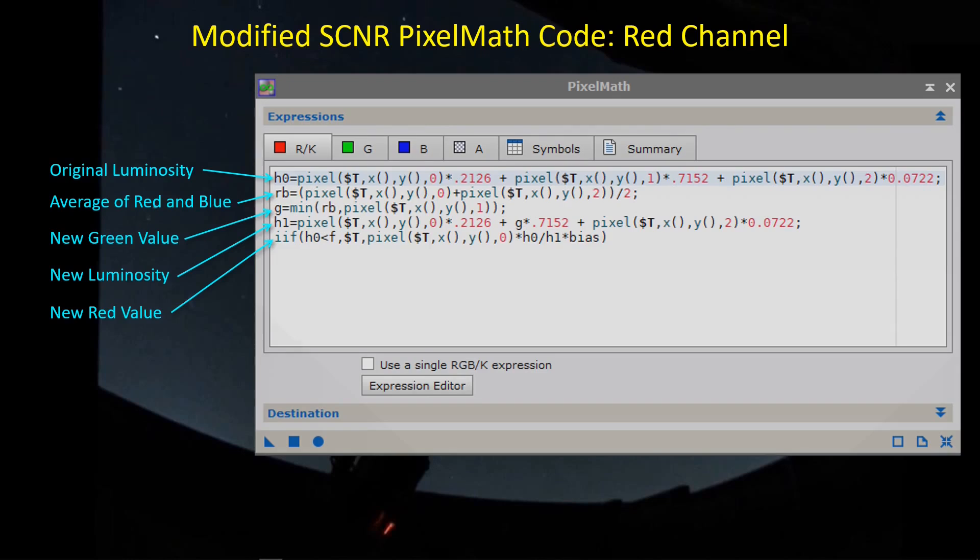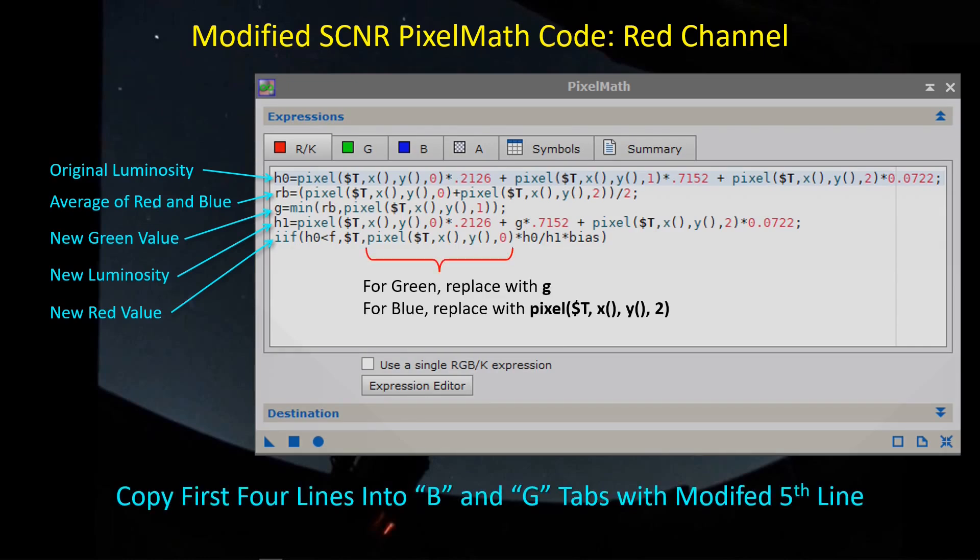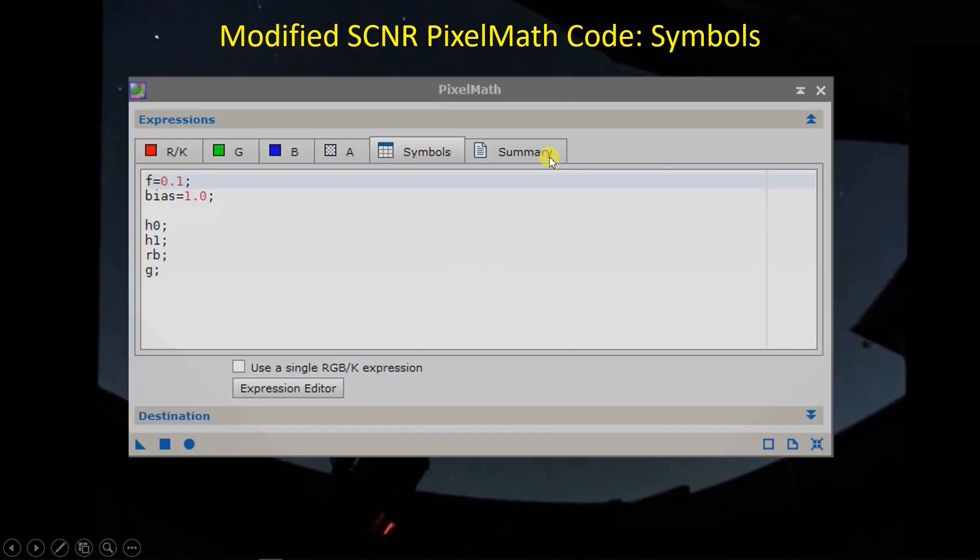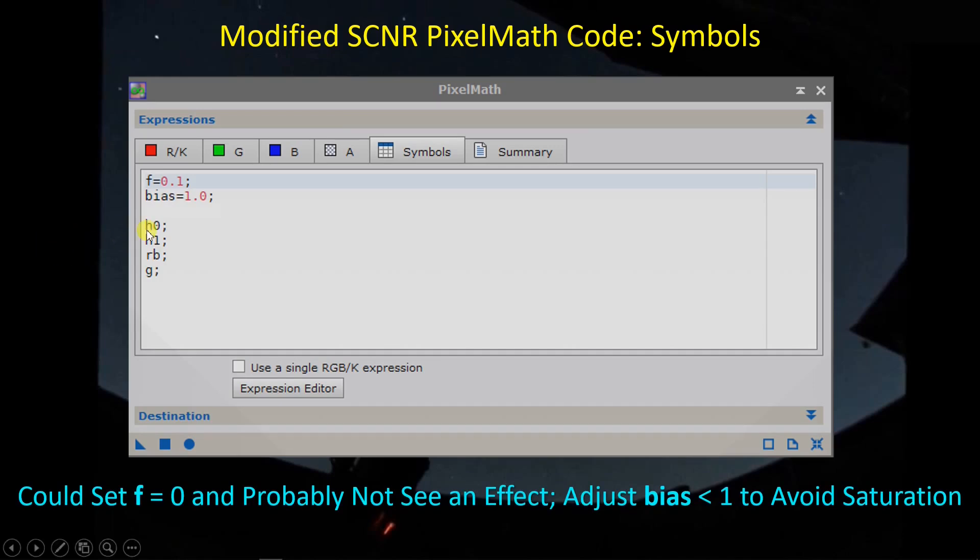That's what you would have in the red tab. Just copy and paste all these lines into the green and the blue tabs, except that in the green tab what we want to do is replace this pixel expression here with just the letter g that we calculate for the new value of green. Then in the blue we're going to take the pixel color index for red and replace it with the color index for blue which is just two. There are some symbols we're making use of, so we'll have to go over to the symbols tab and enter in a couple of things. First is the floor, this is 0.1, so if the luminosity is less than 0.1 the modified SCNR function doesn't do anything. Then there's the bias which hopefully we can leave at 1.0 to pull luminosity back up to what it was. However if you find that after running this you're getting some saturation in some colors at different points in the image, dial bias back to a smaller number to eliminate that luminosity.